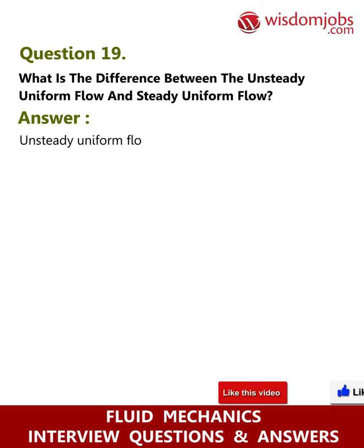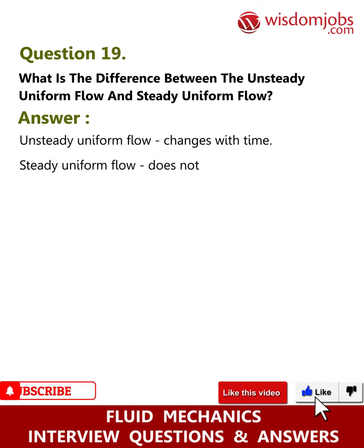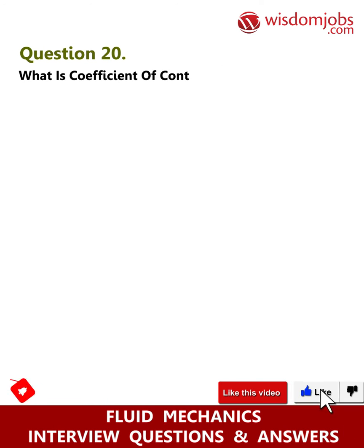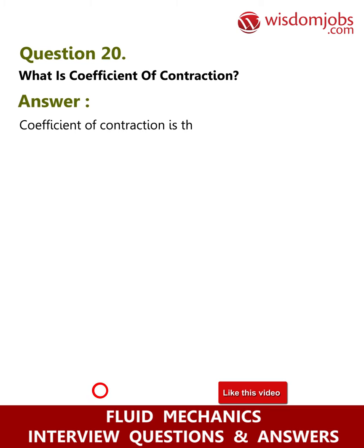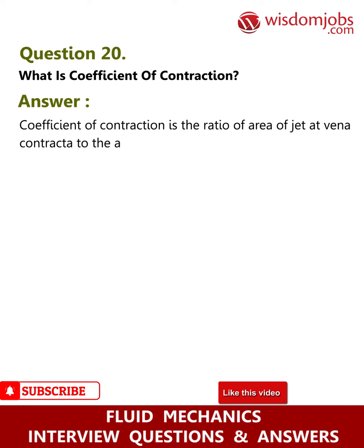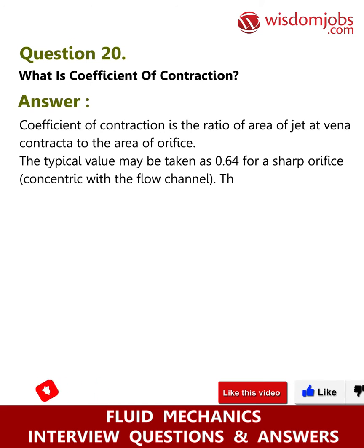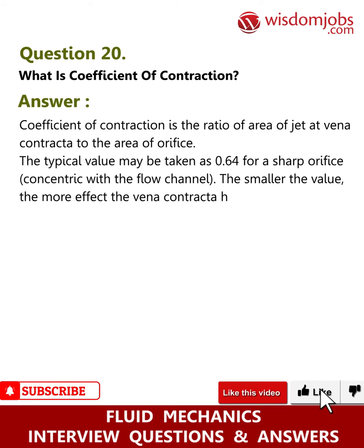Answer: Unsteady uniform flow changes with time; steady uniform flow does not change with time. Question 20: What is the coefficient of contraction? Answer: The coefficient of contraction is the ratio of the area of the jet at the vena contracta to the area of the orifice. A typical value may be taken as 0.64 for a sharp orifice concentric with the flow channel. The smaller the value, the more effect the vena contracta has.